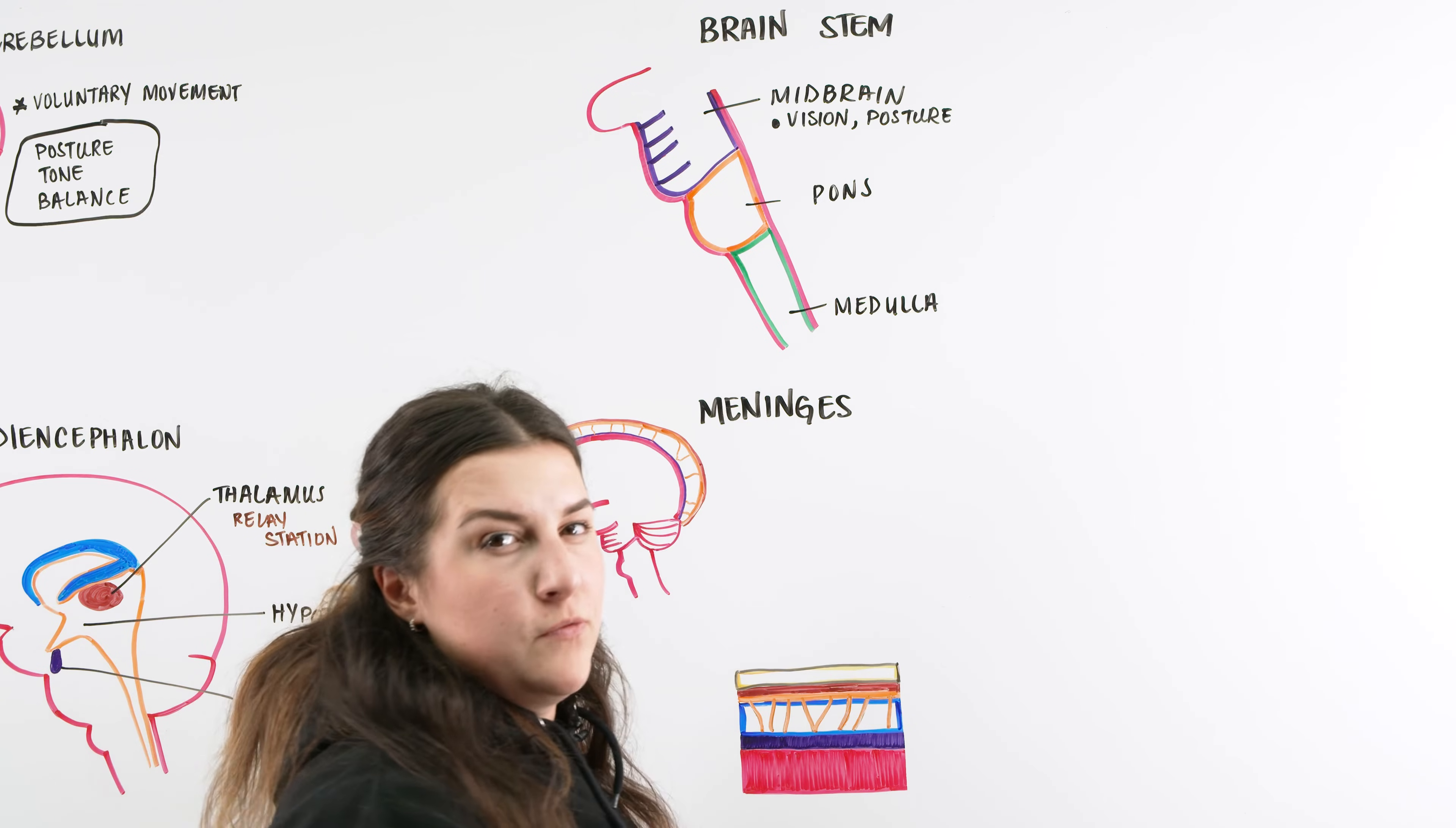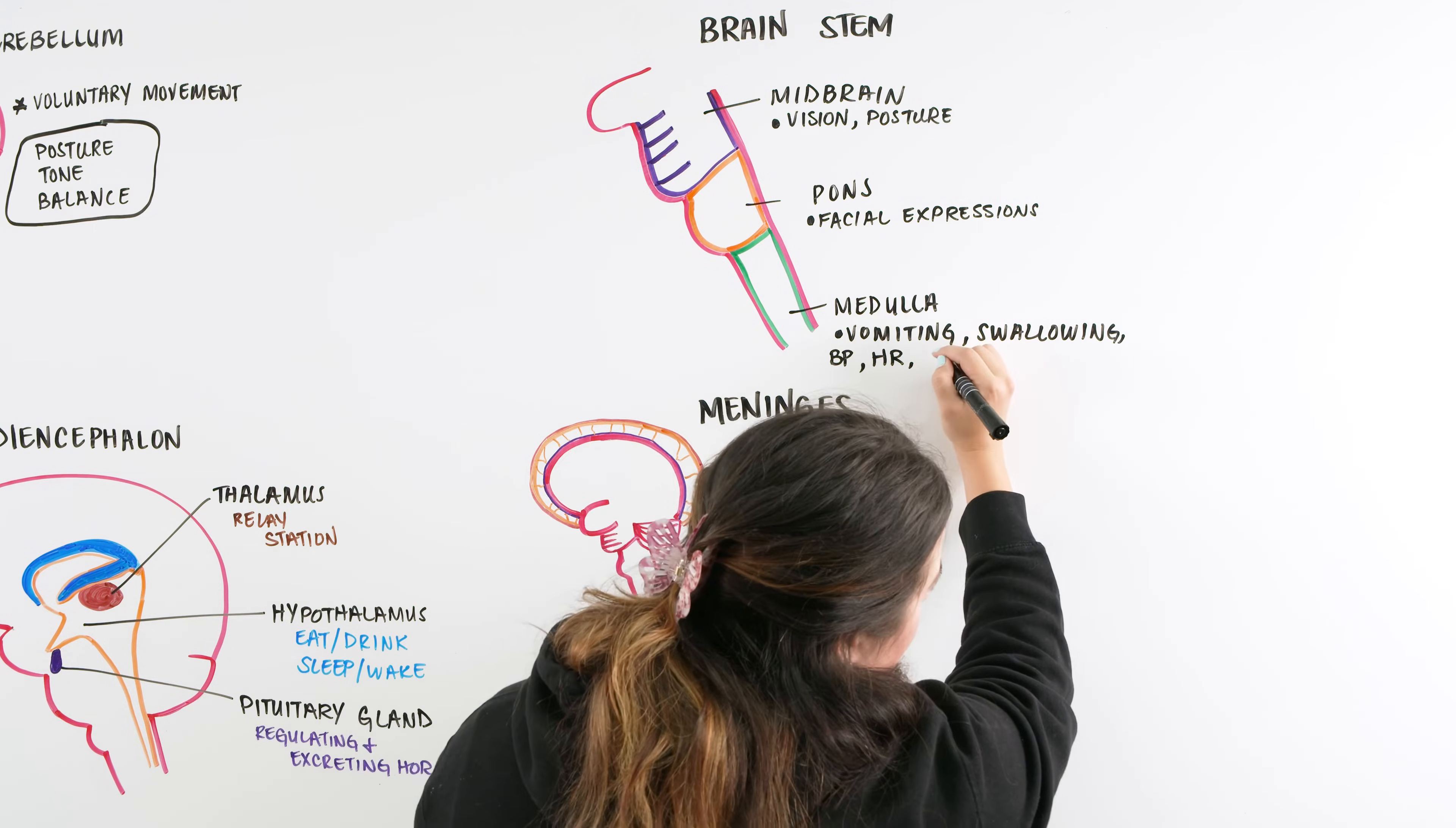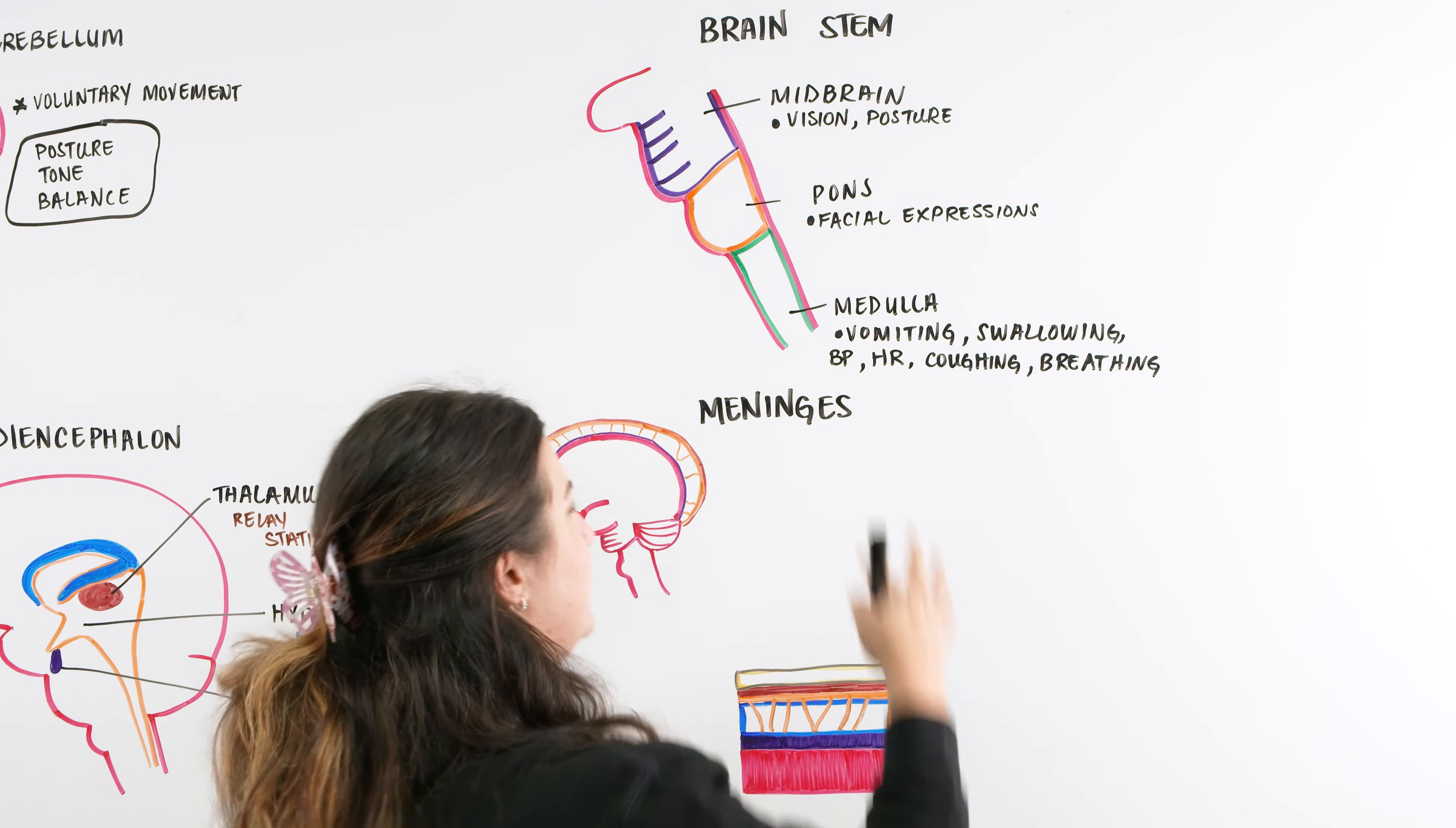Then we have our pons, the area that is focusing on our facial expressions. And we have our medulla. Our medulla takes care of coughing, swallowing, reflexes, blood pressure, heart rate, and digestion. Vomiting and a lot of different types of areas within swallowing and gag reflex take place within the medulla. This little brain stem that's connecting the brain to the spinal cord takes care of a lot of crucial functions: facial expressions we use to convey verbal and non-verbal communication, vision and posture, and all these other components like heart rate, coughing, breathing, swallowing, and blood pressure.